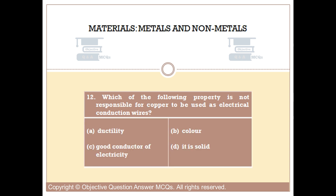Question number 12. Which of the following properties is not responsible for copper being used as electrical conduction wires? Option A: Ductility. Option B: Color. Option C: Good conductor of electricity. Option D: It is solid.